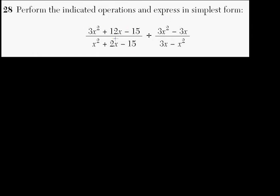And then we have this gigantic polynomial, 3x squared plus 12x minus 15, over x squared plus 2x minus 15, divided by this other polynomial, 3x squared minus 3x, over 3x minus x squared.